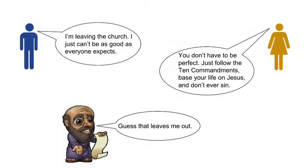As we go on into logic, let's take a look at an example of where this can actually be confusing and lead to a wrong understanding — that's why we consider it a fallacy. The fellow in blue says, 'I'm leaving the church. I just can't be as good as everyone expects.' The girl in gold says, 'You don't have to be perfect. Just follow the Ten Commandments, base your life on Jesus, and don't ever sin.' Now, stop and think about that. She's making a distinction without a difference — she's saying you don't have to be perfect, but what you do have to do sounds exactly like being perfect.